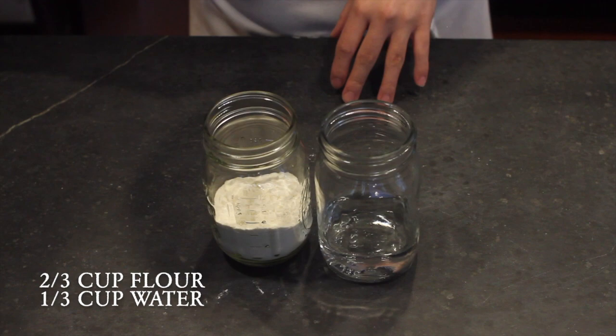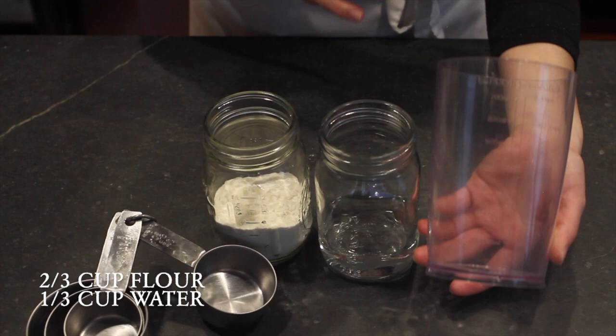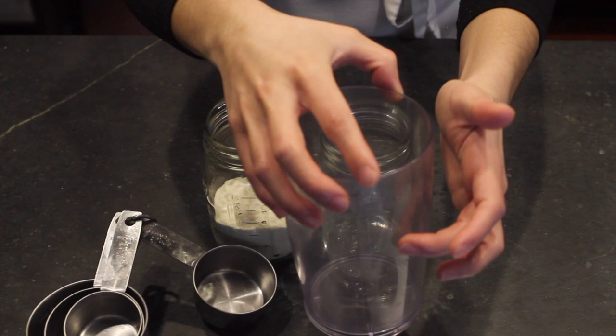If you're using American units of measure, it's roughly two-thirds cups of flour and one-third cup of water. Remember when you're measuring, you'll want to use two different tools. There are liquid measuring cups that are clear and have markings on the side, and there are dry cup measures that you level off. Each one will help you more accurately measure your ingredients.